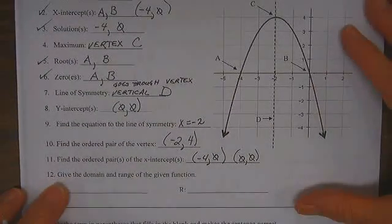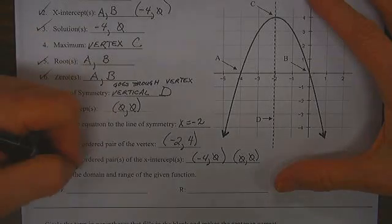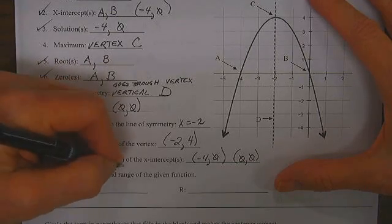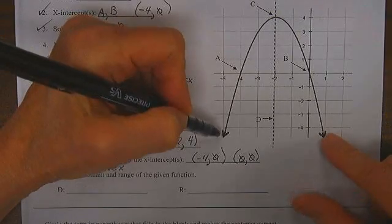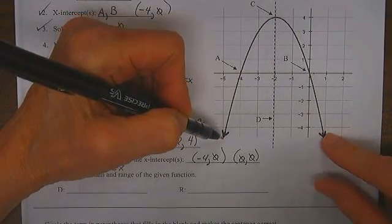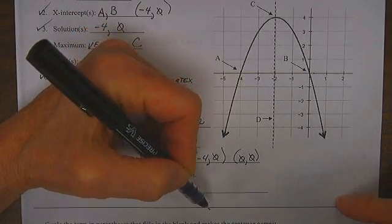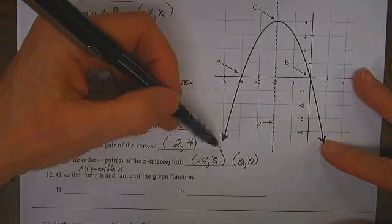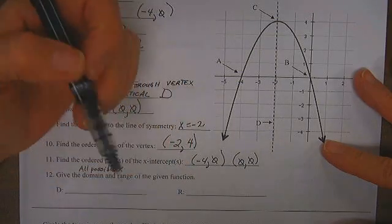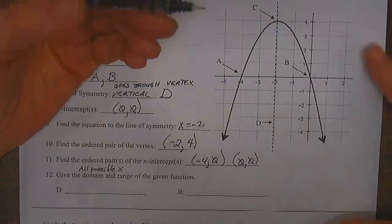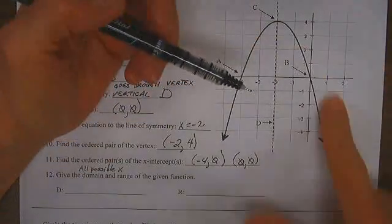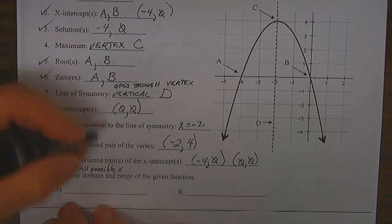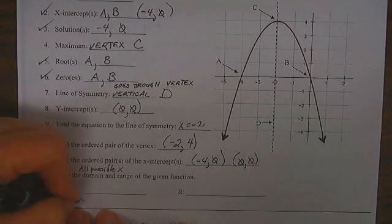Give the domain and range of the given function. Domain is all possible values of x. We note that these arrows mean that the curve does not stop but goes on and on forever. If we go for long enough, eventually it will go to infinity, both positive infinity and negative infinity. So the domain is all real numbers.